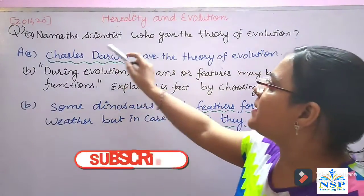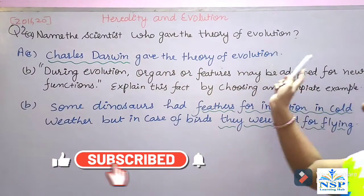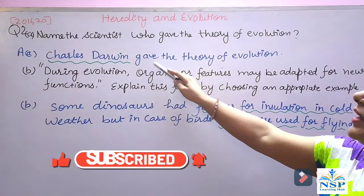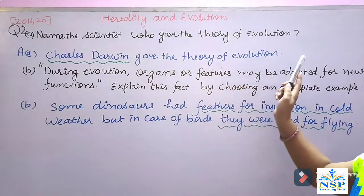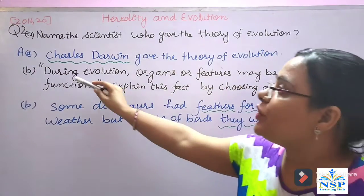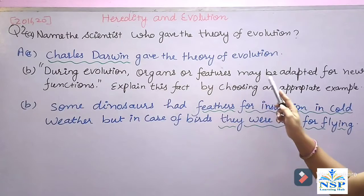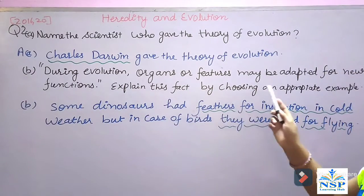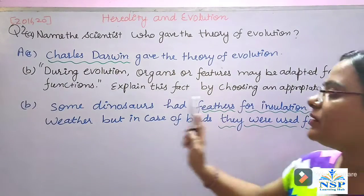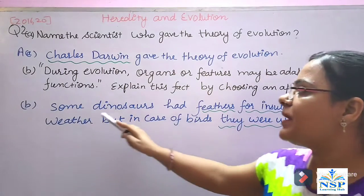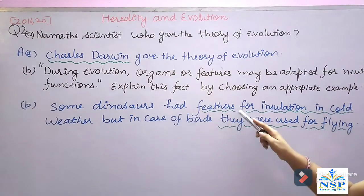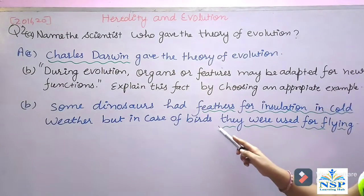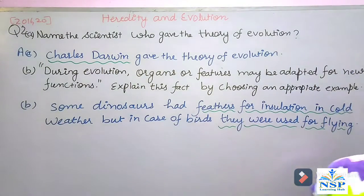Next Question: Name the scientist who gave the theory of evolution. The answer is Charles Darwin. During evolution, organs or features may be adapted for new functions. For example, dinosaurs had feathers for insulation in cold weather, but in case of birds, they were used for flying.